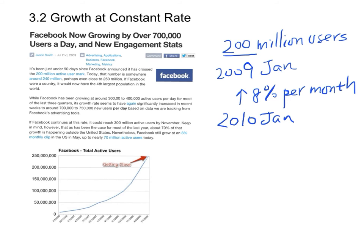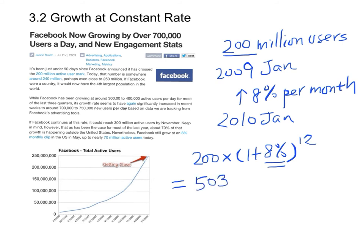There will be 200 million times (1 + 8%), assuming this eight percent is constant, and since we have 12 months the power should be 12. By using our calculator, this amounts to 503.6 million users.